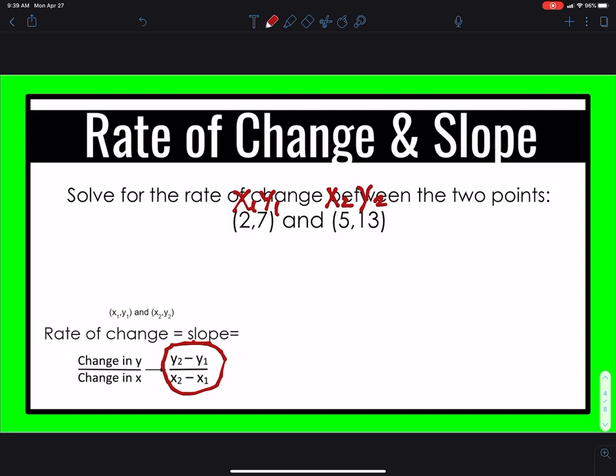So my first point is y2. So y2 is 13 minus y1 is 7 over my change in x. So my x2 is 5 minus my x1 is 2. And then I solve my numerator on top. So 13 minus 7 is 6. All over, 5 minus 2 is 3. So notice that we have a ratio or a fraction. And then you can go ahead and simplify it. If you can't simplify it, you can just leave it as a fraction or a ratio. But 6 over 3 simplifies nicely to 2. So my rate of change for this problem is 2.